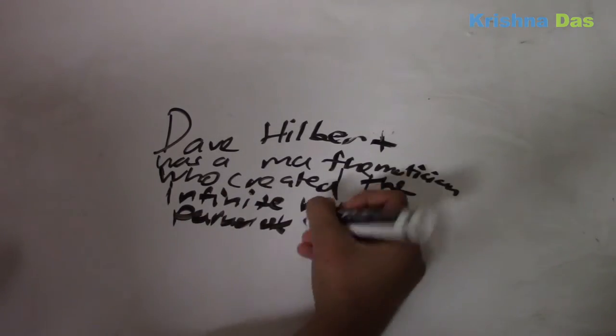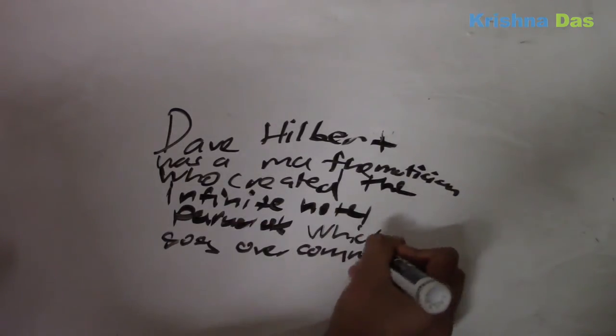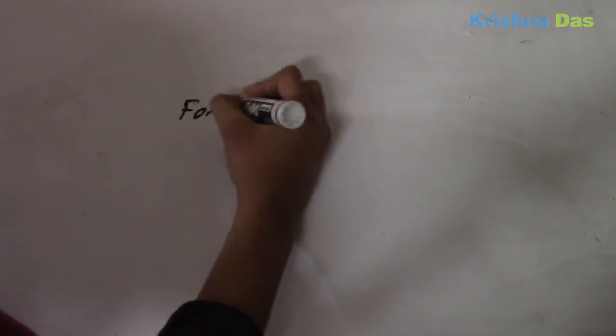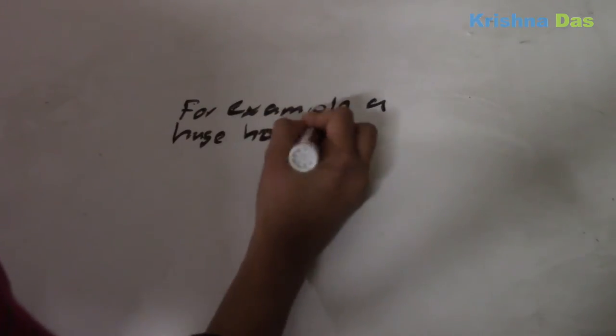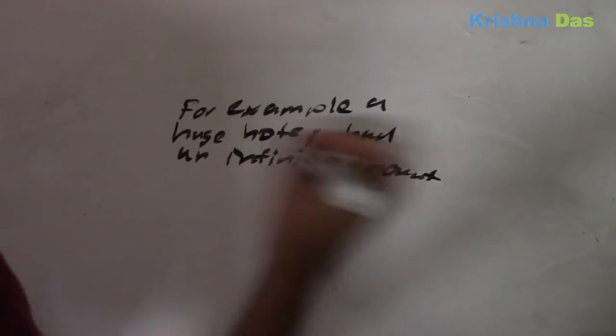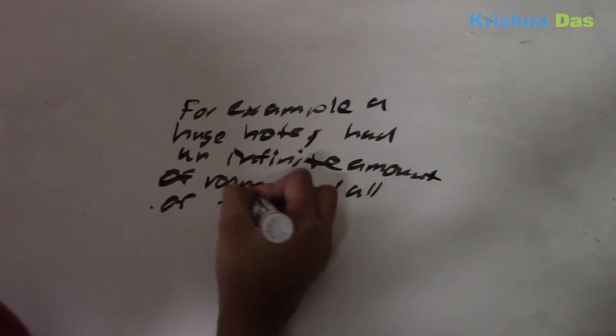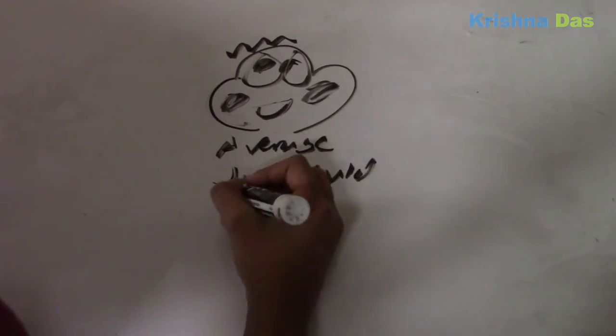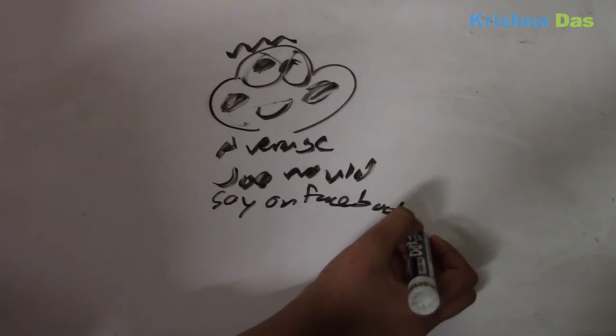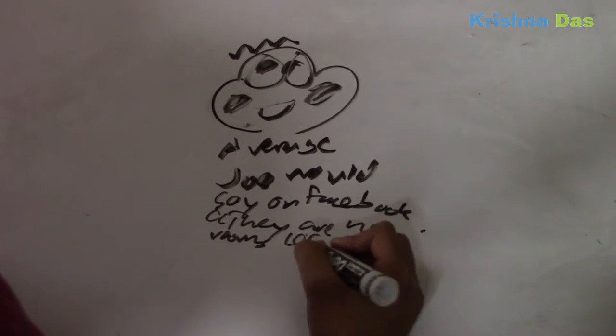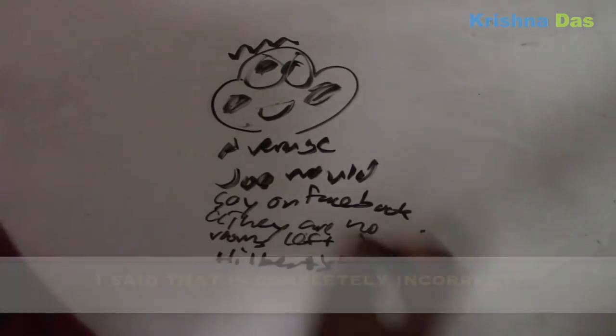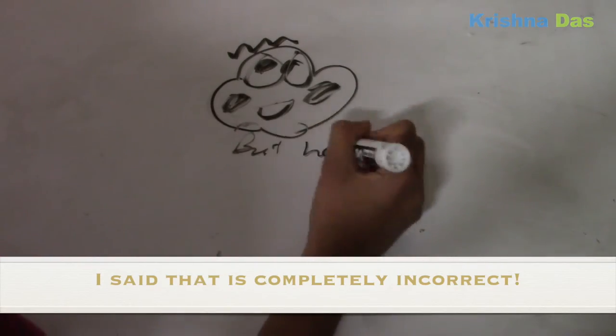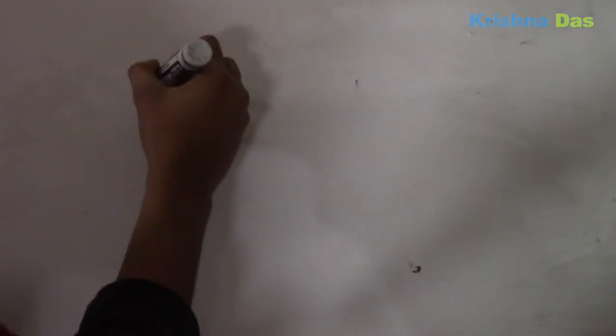He was a mathematician who created the infinite hotel paradox, which goes beyond common sense. So basically, for example, a huge hotel had an infinite amount of rooms, and all of the rooms were filled. The average Joe says on Facebook, the hotel is filled. No, that's completely incorrect, because it's a paradox. It's the infinite hotel paradox.